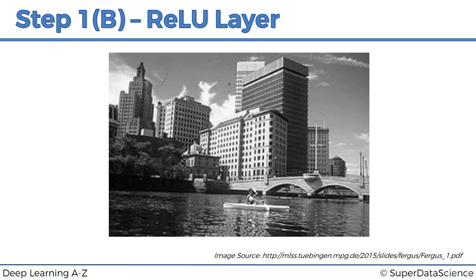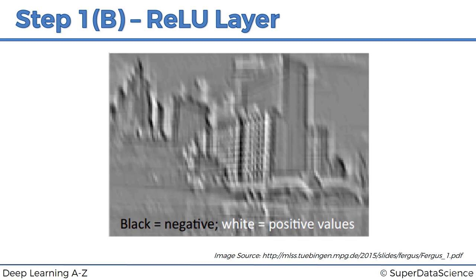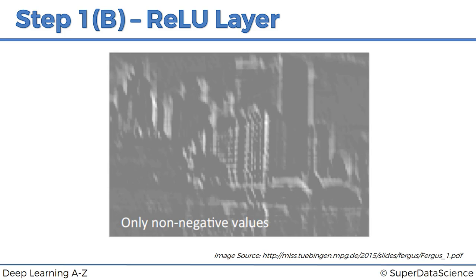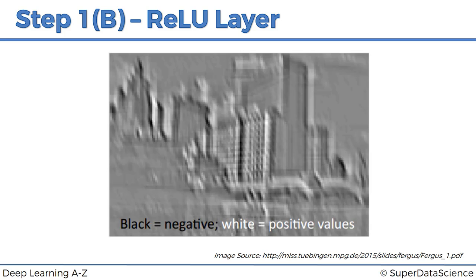Let's have a look at an example. Here is an original image. When we apply a feature detector to this image, we get something like this — black represents negative values, white represents positive values. When you apply a feature detector to a proper image with lots of different values, and feature detectors can have negative values themselves, you sometimes get negative values. What a rectified linear unit function does is remove all the black — anything below zero turns into zero. So from this, it turns into this.